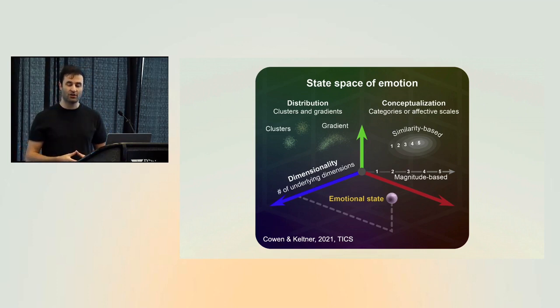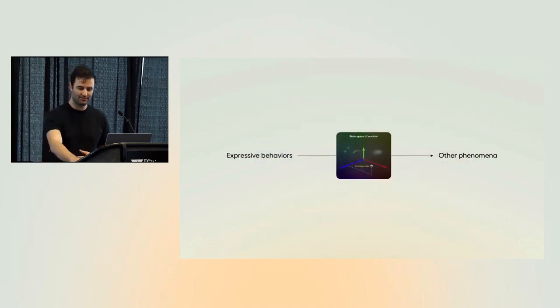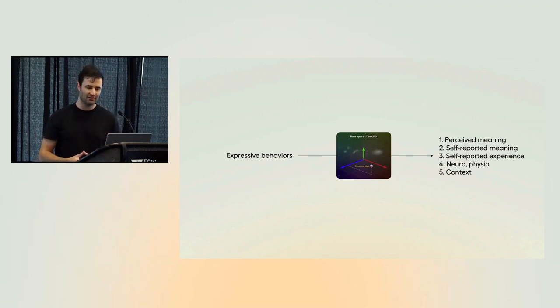And that space is defined by three properties. The first being its dimensionality or the number of varieties of emotion. The second being the distribution of states within the space, so how things are structured, whether things are clustered or continuous for example. And the third being how we conceptualize states within this space, so how emotion and mental state related concepts like awe and valence actually tile this space of expressions or behaviors.